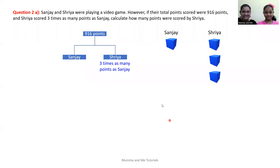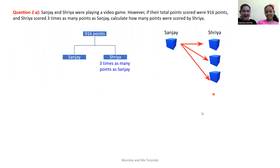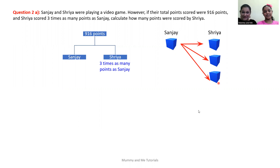A blue box. And Shreya scored three times as many points as Sanjay. So if I have one box of cookies and you have three times as many cookies as I have, how many boxes of cookies do you have? I have your one box times three, which would be three boxes. So you finally get more boxes than I do.